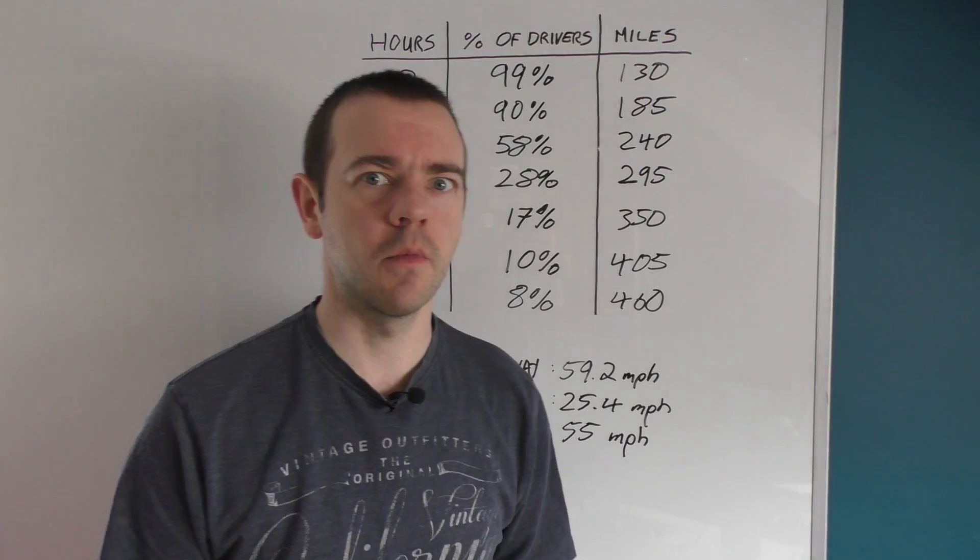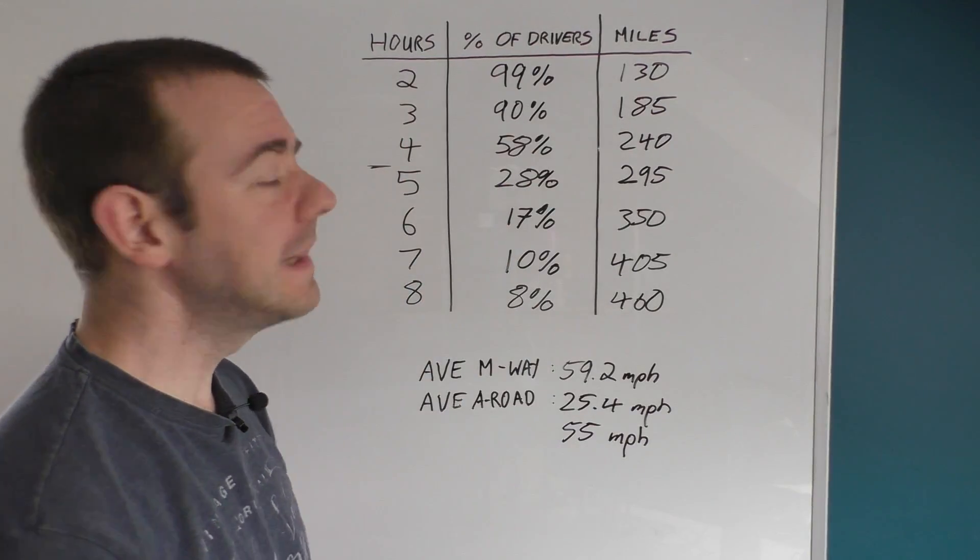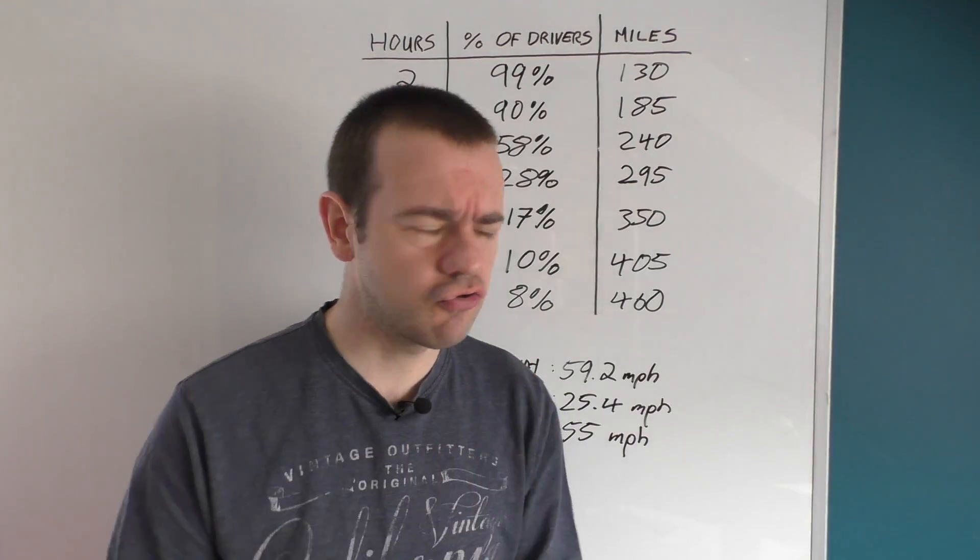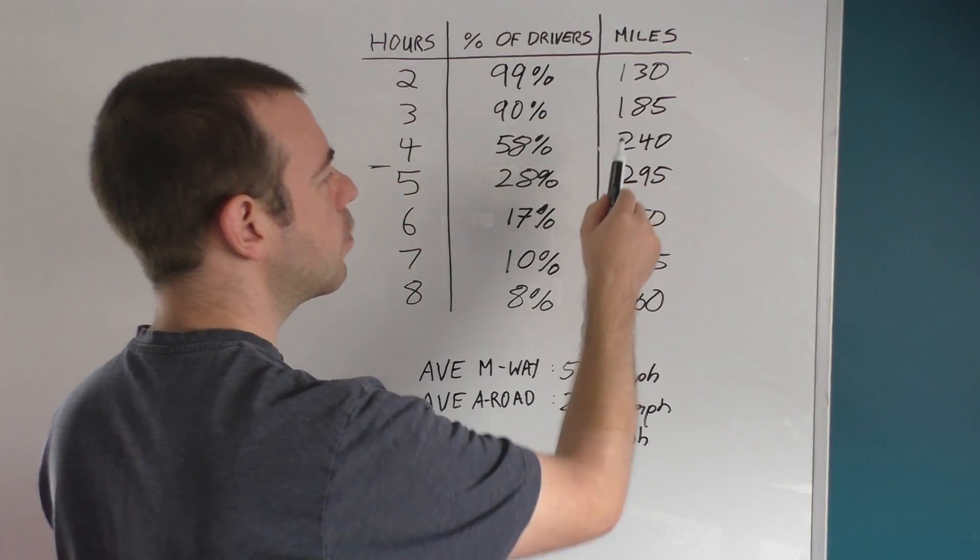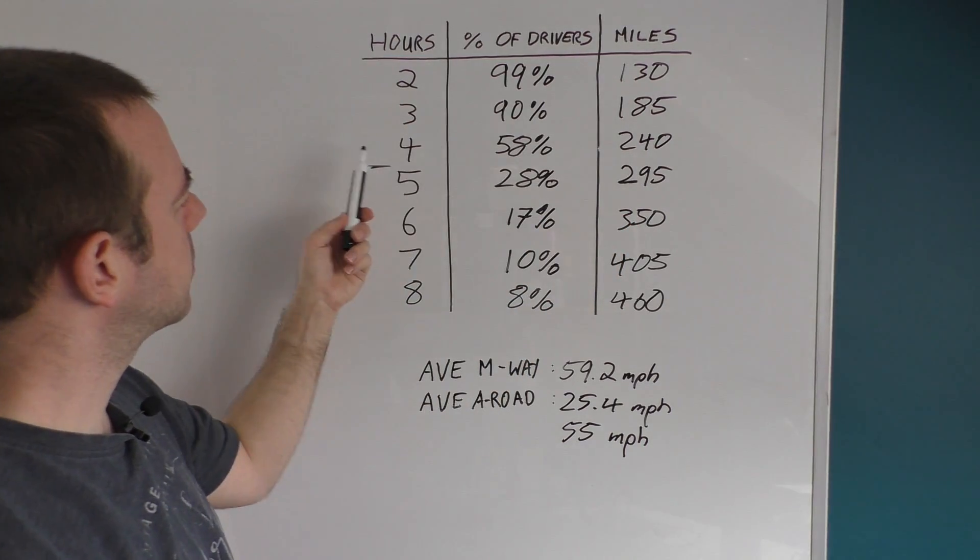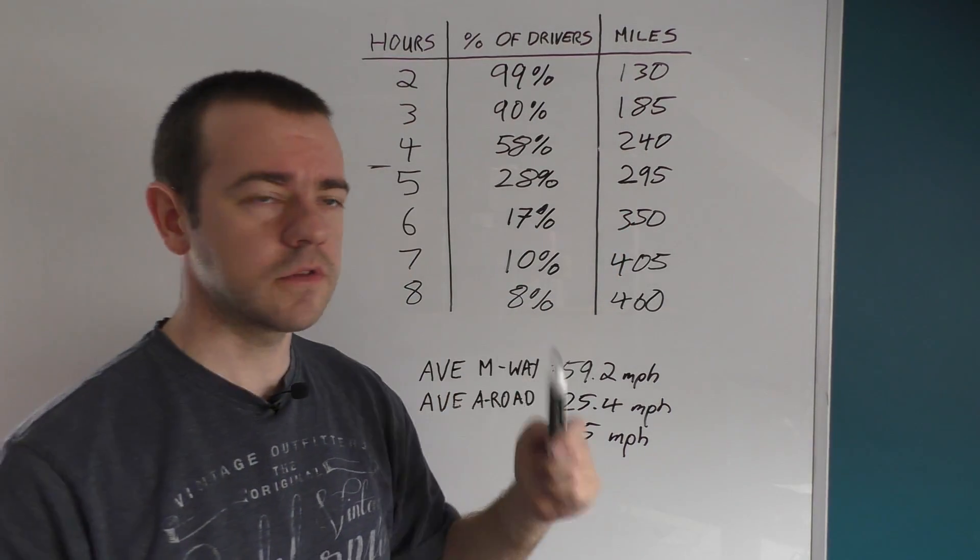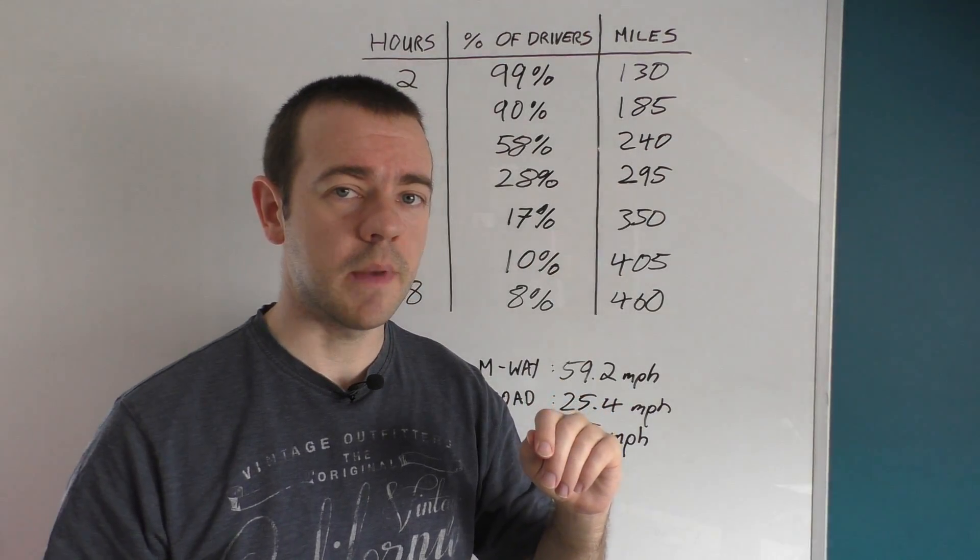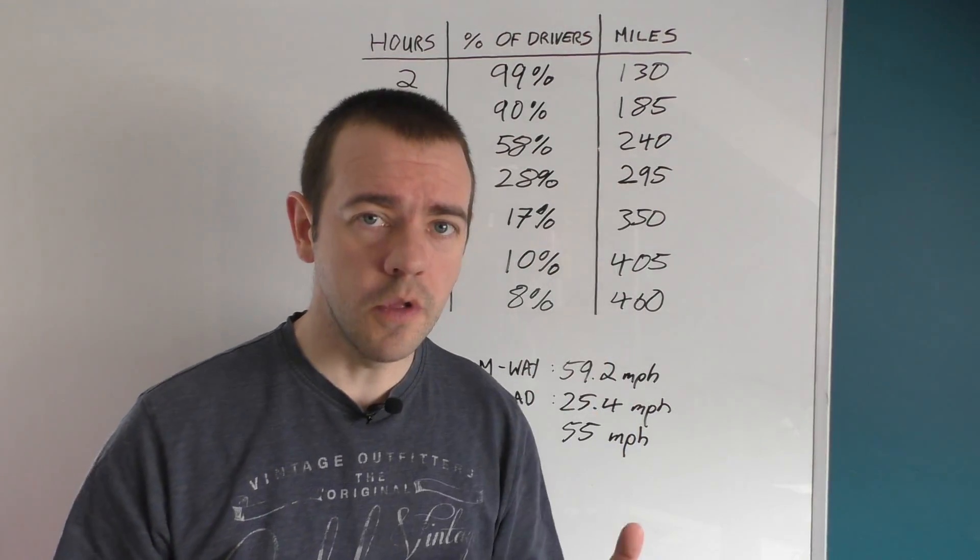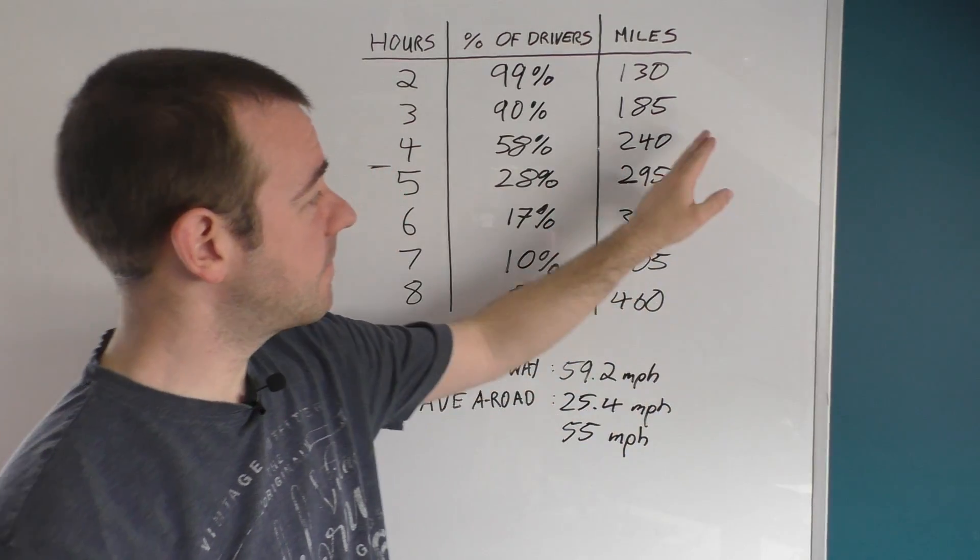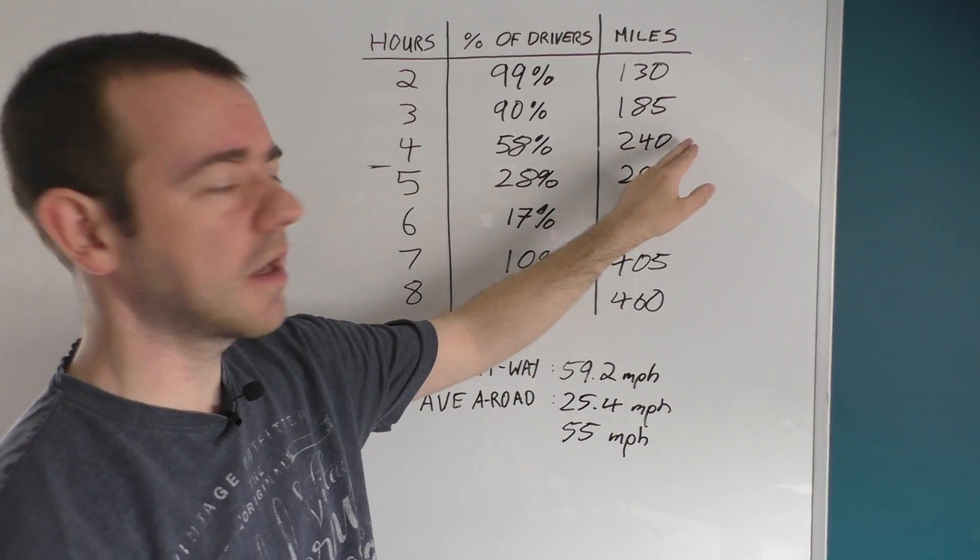I said at the beginning, the whole purpose of this video is to make you re-evaluate what you believe you need in terms of range. But let me make this extremely clear: this is the worst case scenario. The amount of times, let's say if you're this person here, I do no more than four hours of driving, so you'd think, well I need a car that can do at least 240 miles in the real world on the motorway in winter, but you won't.